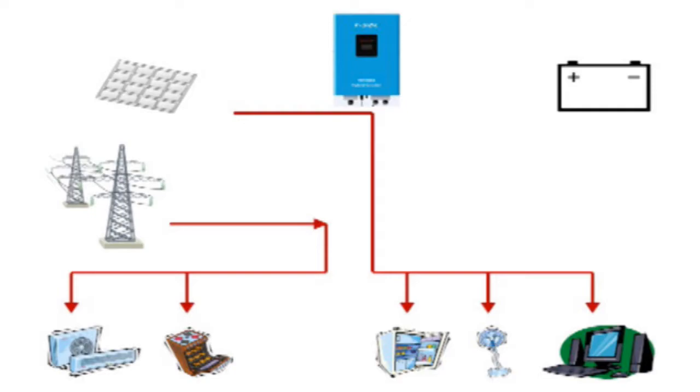After that, the inverter will use the surplus energy to charge up the batteries. When the batteries are full, the inverter will now start energizing the appliances that are directly powered by the grid. We'll call it as on-grid or grid tie loads.